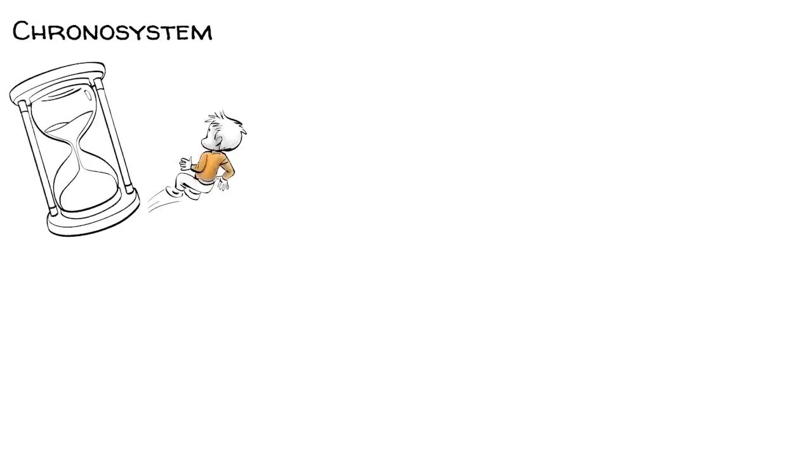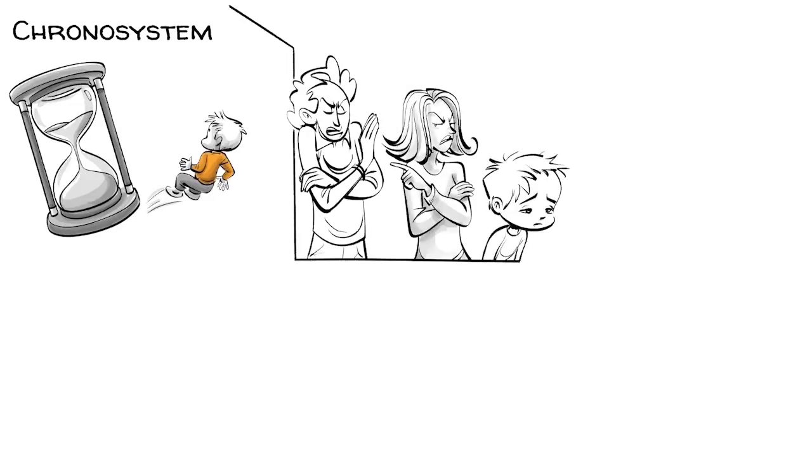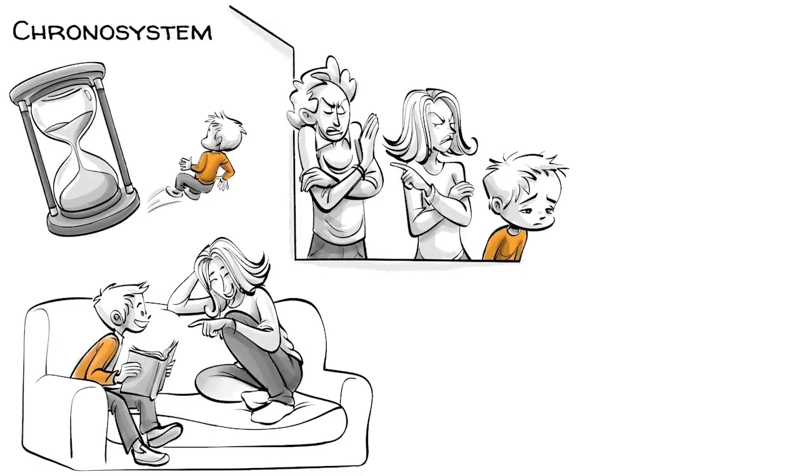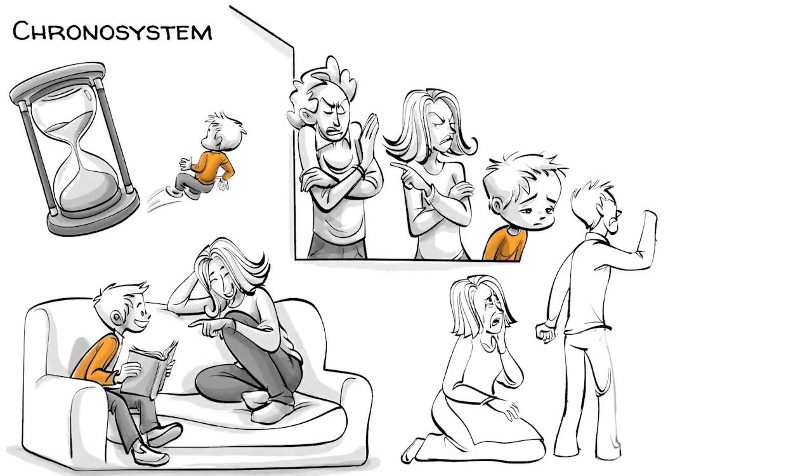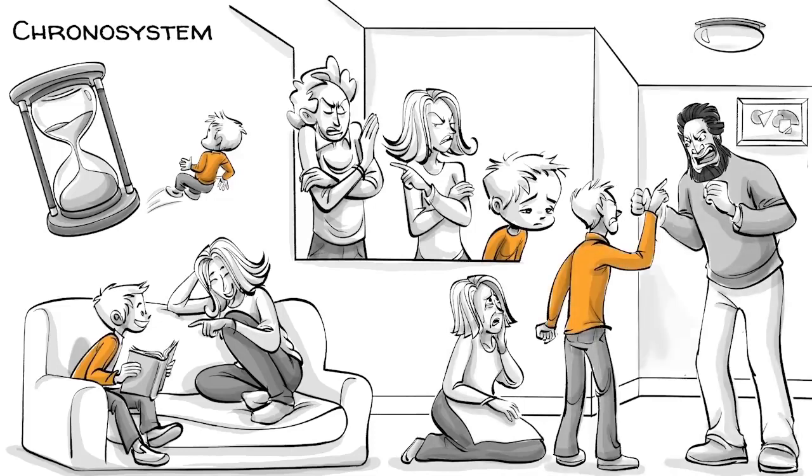The chronosystem refers to changes in the child and the environment over time. As the child grows up, the parents may stop loving each other and divorce, which can be traumatic for an eight-year-old boy. Five years later, he may have come to terms with how things turned out. But when the boy turns 16, his mom's new boyfriend moves into their tiny apartment, and things get difficult again.